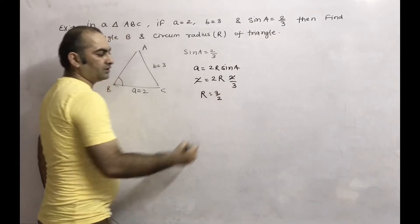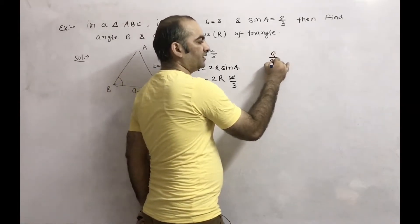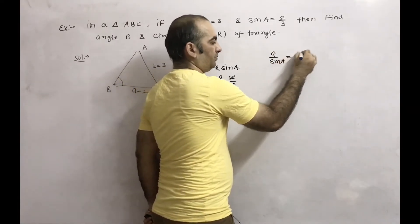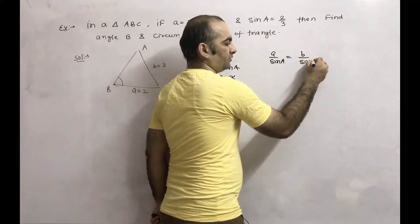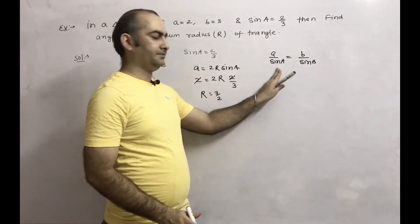Next we have to find out angle B. We know that a over sine A equals b over sine B. According to sine rule, this will be equal.